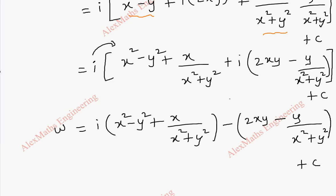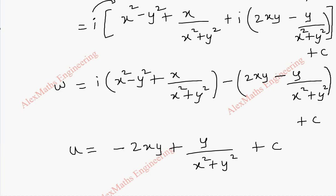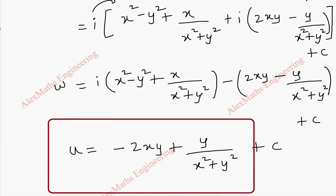From this we take the real part u. The real part is u = −2xy + y/(x² + y²) + c. Thus we have found the real part u.